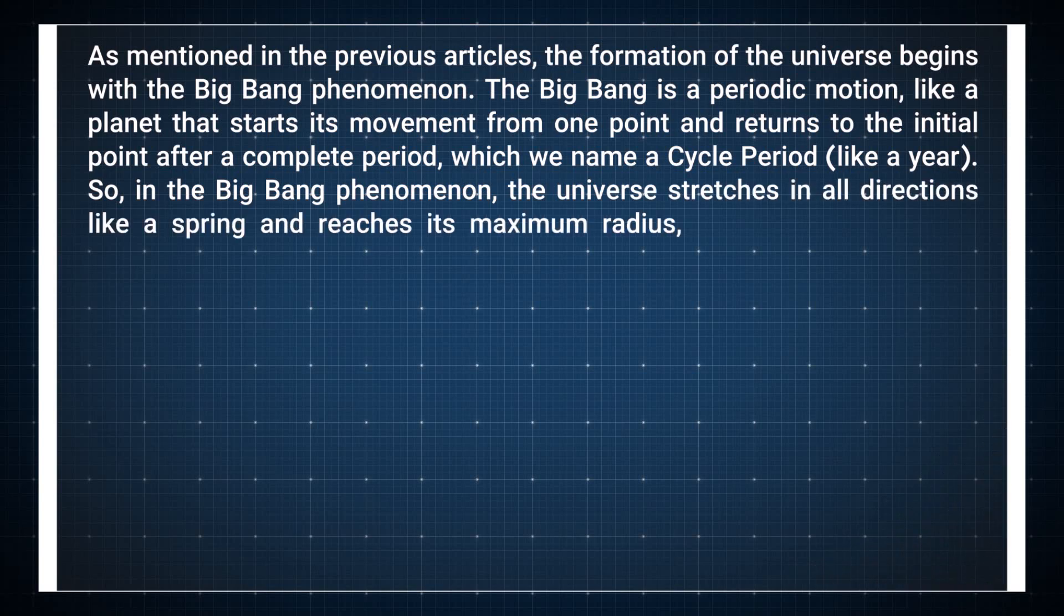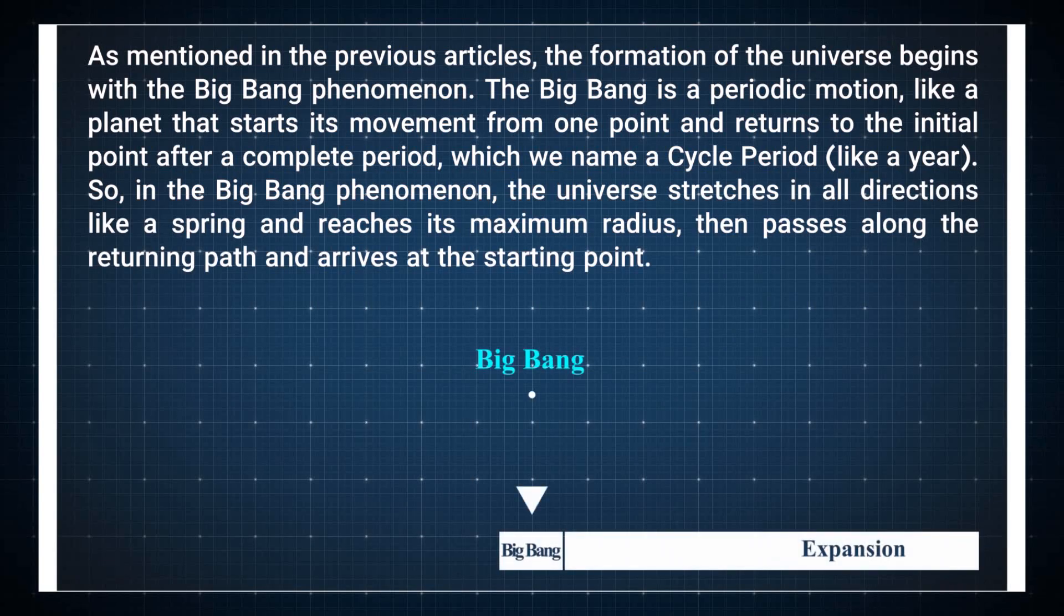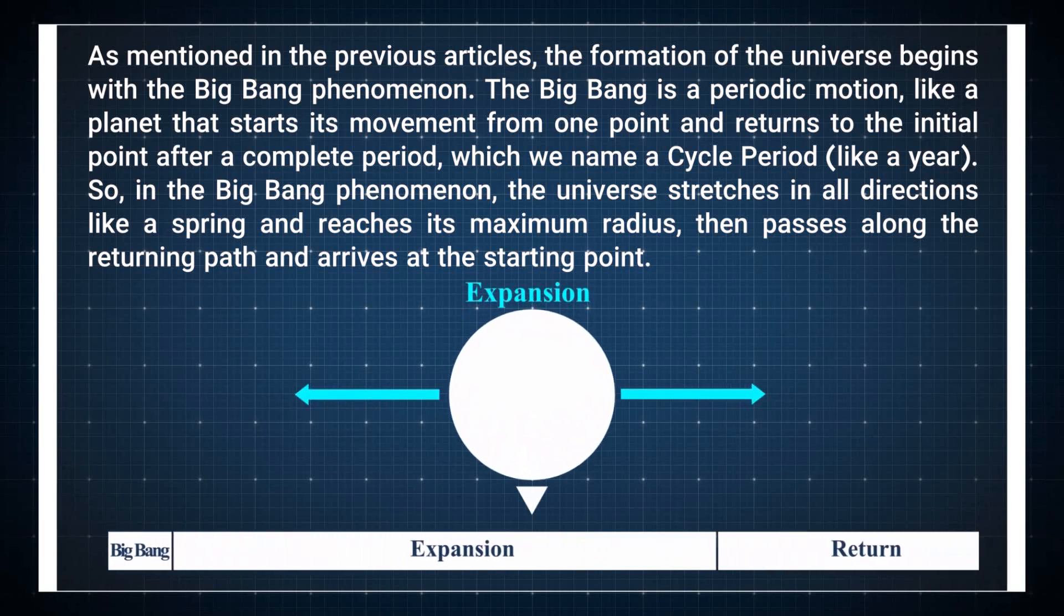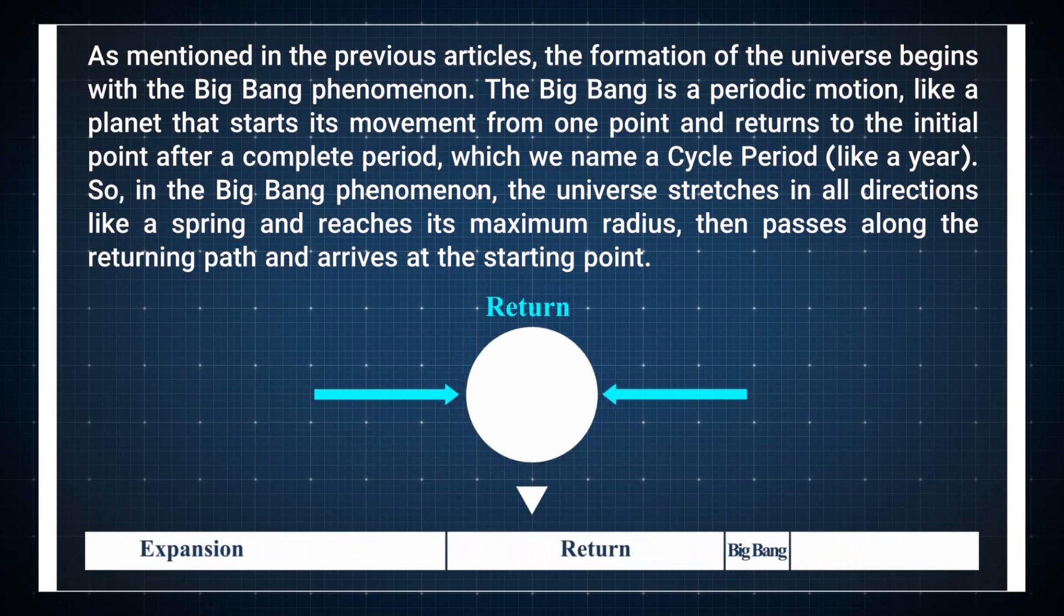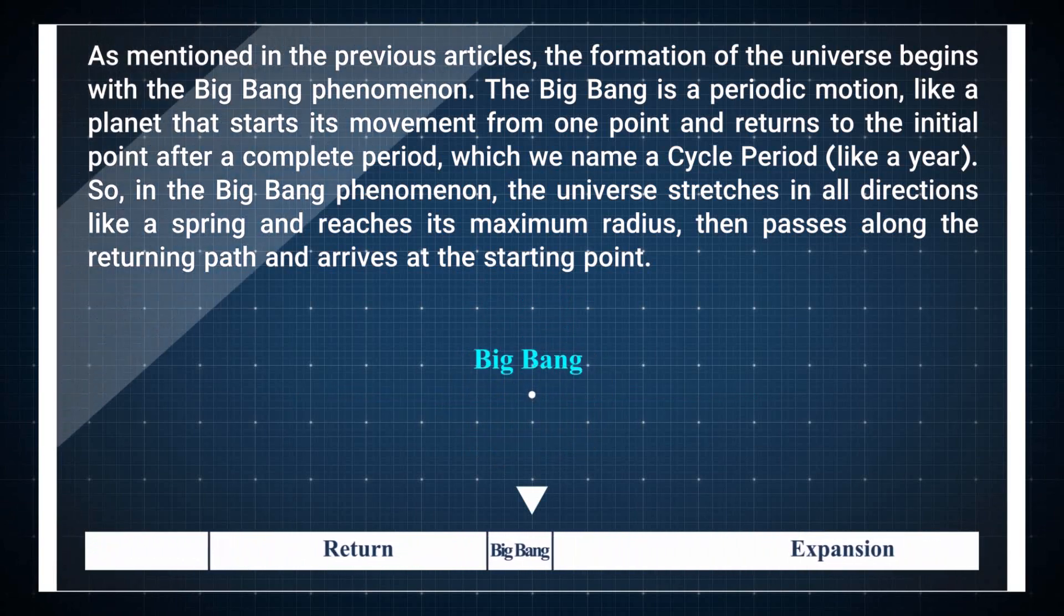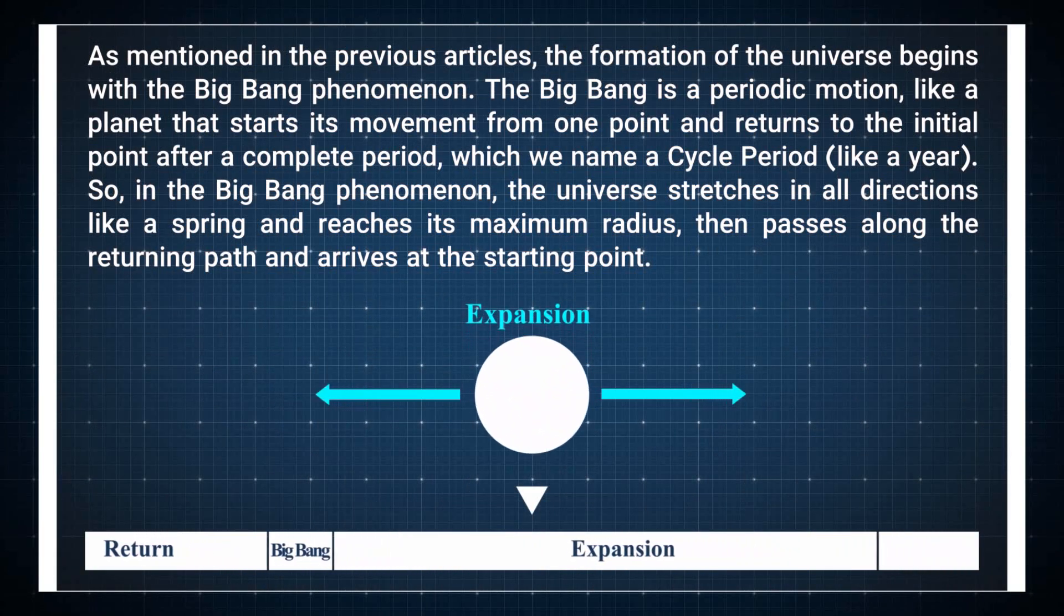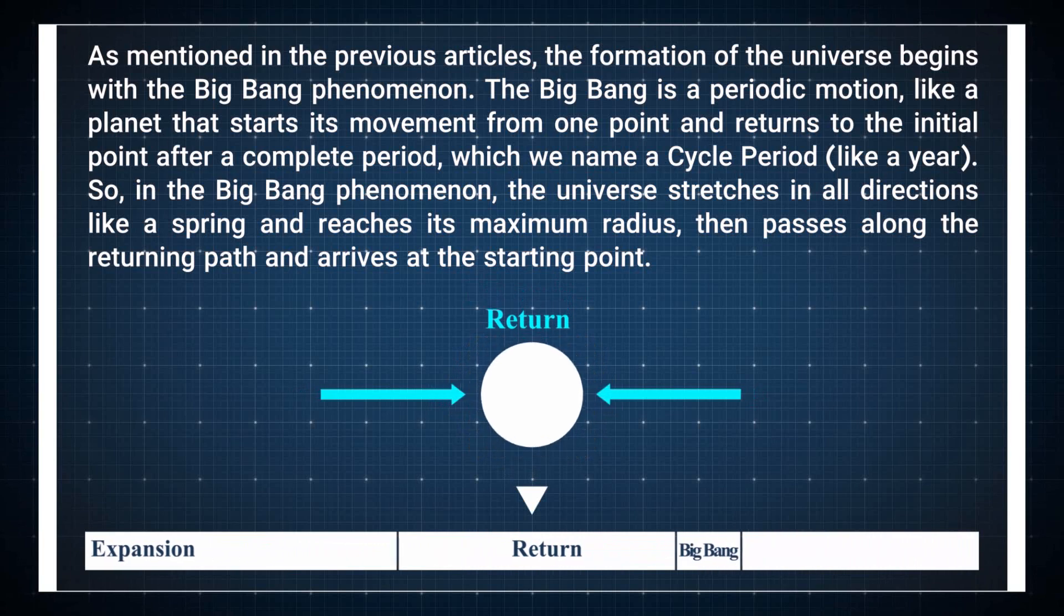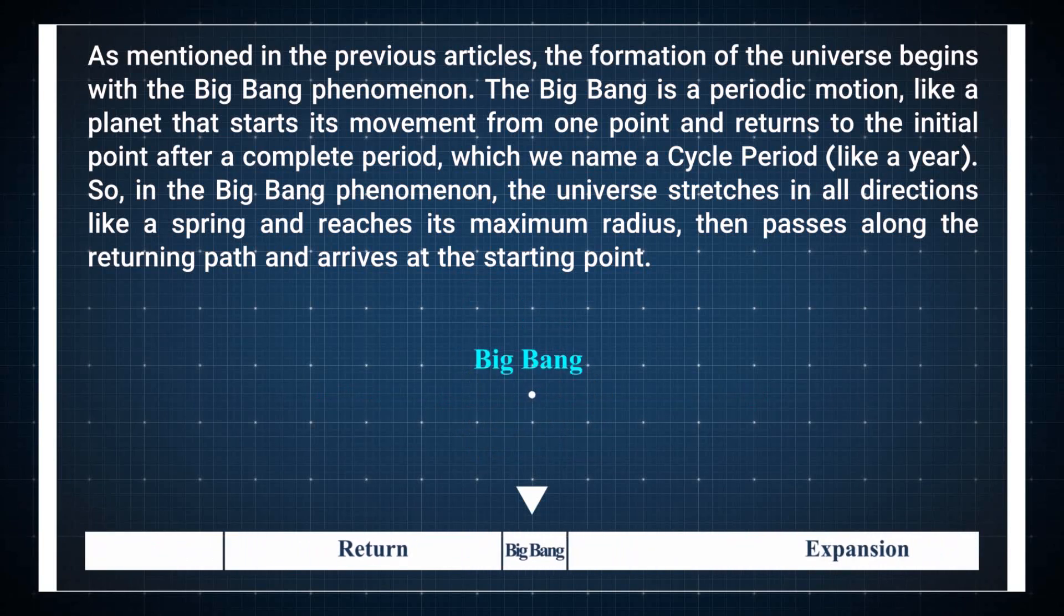The Big Bang is a periodic motion, like a planet that starts its movement from one point and returns to the initial point after a complete period, which we name a cycle period like a year. So in the Big Bang phenomenon, the universe stretches in all directions like a spring and reaches its maximum radius, then passes along the returning path and arrives at the starting point.